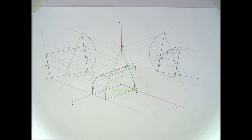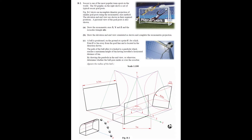Looking at the question again for Part C: a ball is positioned on the ground at point F for a kick. Point F is 9 metres away from the goal line. The path of the ball after it is kicked is a parabola which reaches a maximum height of 6 metres, having travelled a horizontal distance of 6 metres. By drawing a parabola in the end view, determine whether the ball goes under or over the crossbar. As they've told you to draw a parabola in the end view, that's what we're going to do.